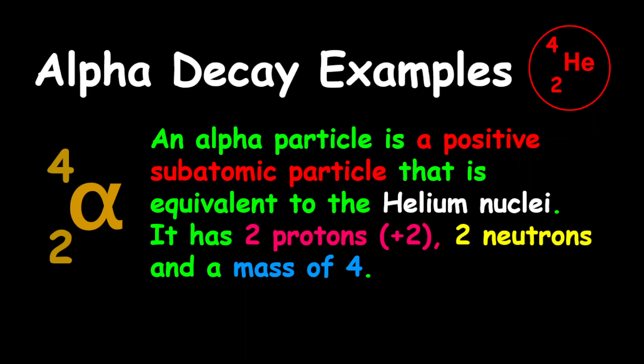An alpha particle is a positive subatomic particle that is equivalent to the helium nuclei. It has two protons, therefore two positive charges, two neutrons, and a total mass of four.